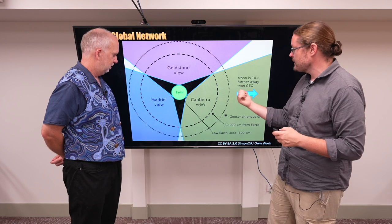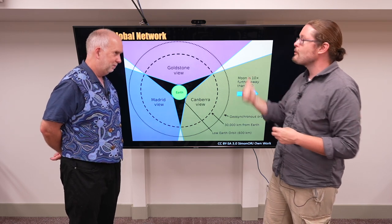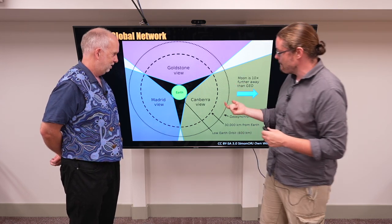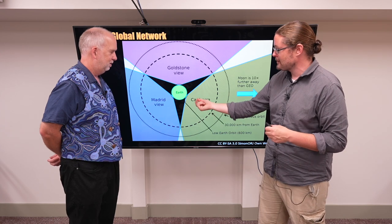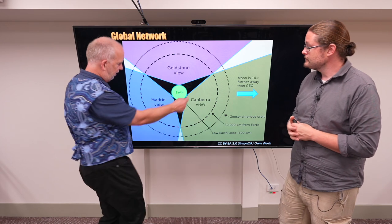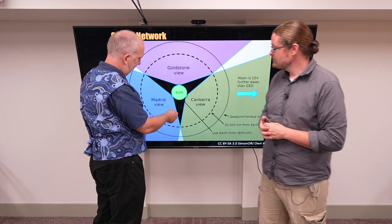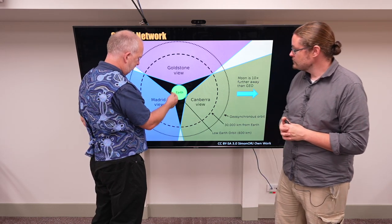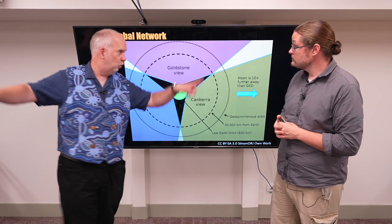But as you get out to geosynchronous orbit, you're over 30,000 kilometers away. So there's a big difference between 400 kilometers and 30,000 kilometers. Yes. So you had something on a very low earth orbit, like this black line here. You see just having three ground stations is not going to be enough because they can't observe all the way to the horizon.